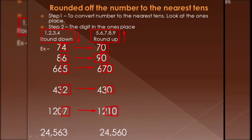Next is 24563. Look at the tens place — it is 6 — and the one's place is 3, which is less than 5. Less than 5 means we don't change the tens place; it remains as it is, the one's place becomes zero, and all other digits remain the same. So it rounds down.